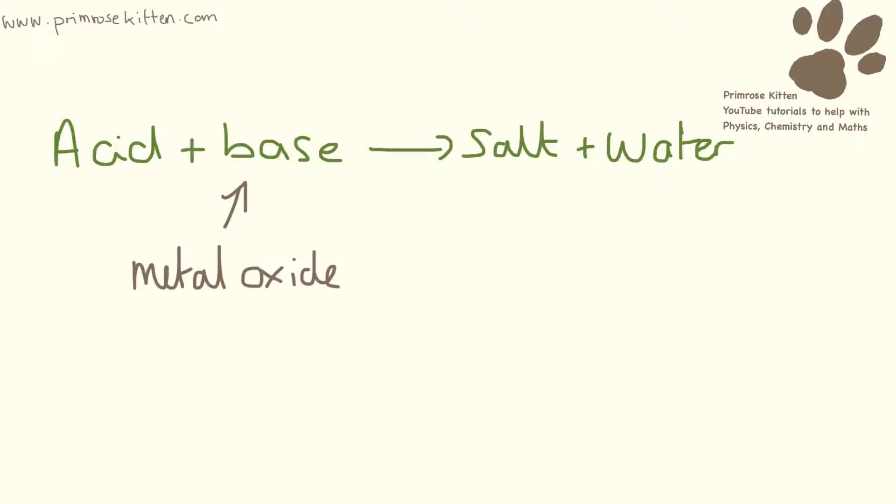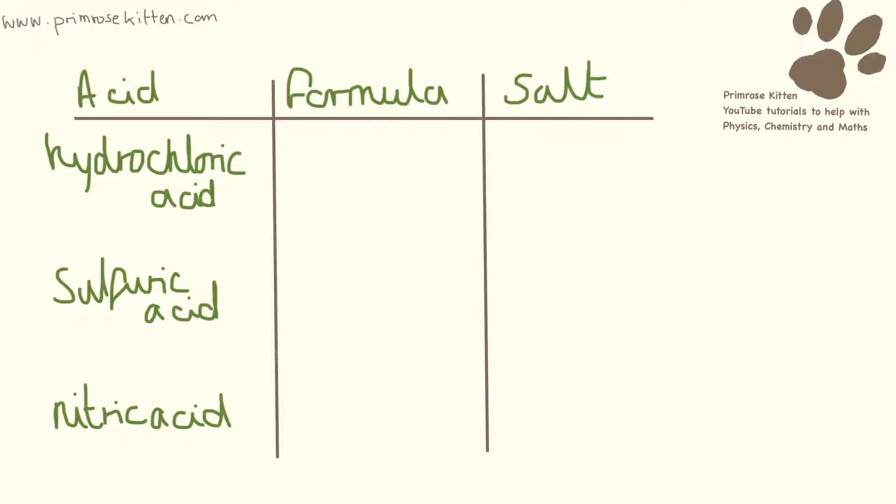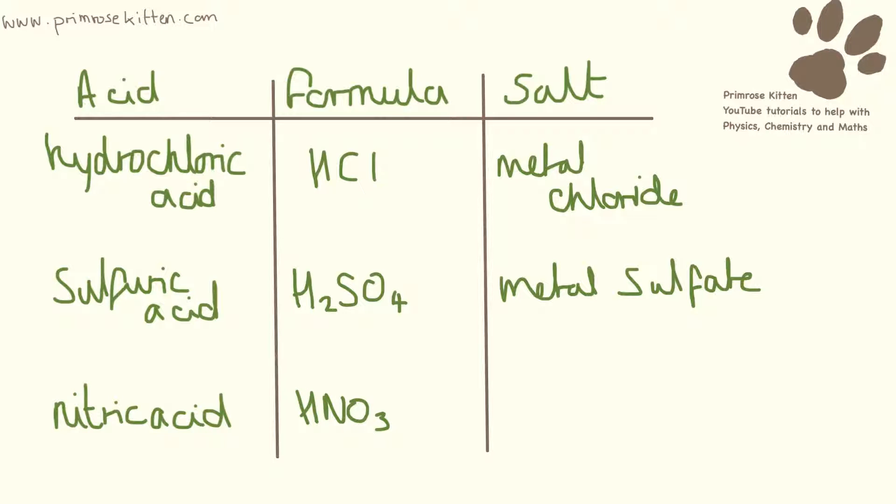This base can be a metal oxide or it can be a metal hydroxide. Now we need to know the formulas and salts for each of the common acids. Hydrochloric acid's formula is HCl and its salt is always going to be a metal chloride. Sulfuric acid is H2SO4 and its salt produced is going to be a metal sulfate. Nitric acid is HNO3 and its salt produced is going to be a metal nitrate. Hopefully you've noticed that all of these three start with H. That's because that's the bit that's responsible for making it acidic.